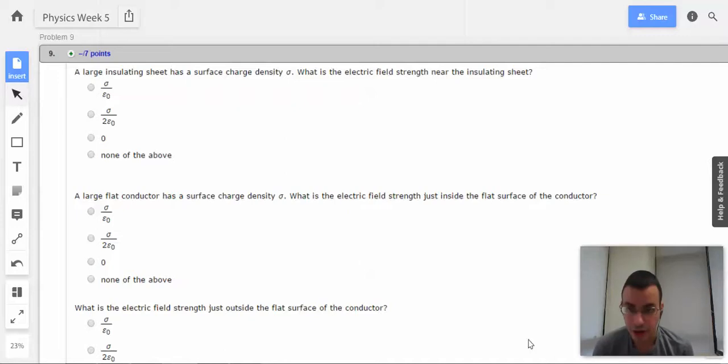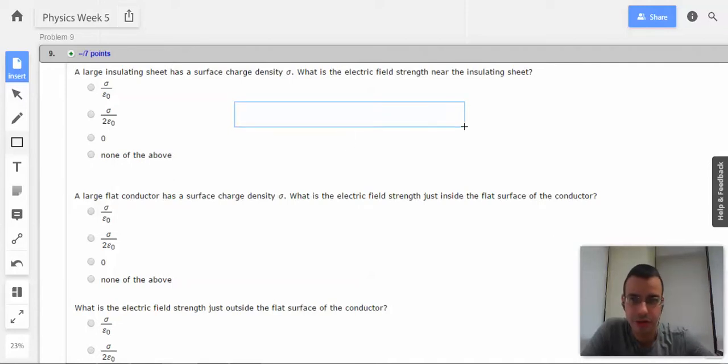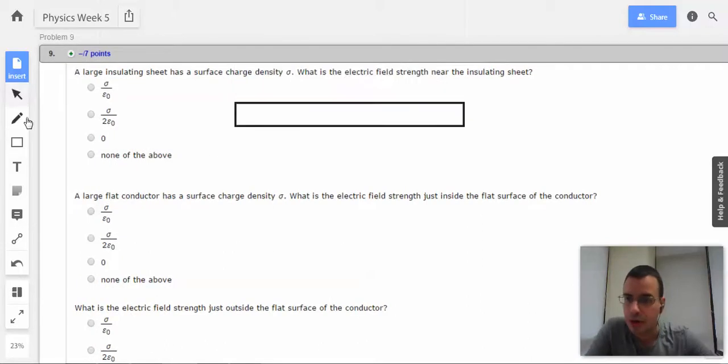Problem 9. A large insulating sheet has a surface charge density of sigma. What is the electric field strength near the insulating sheet? In this case, that's easy. Not difficult at all. Draw a little picture.